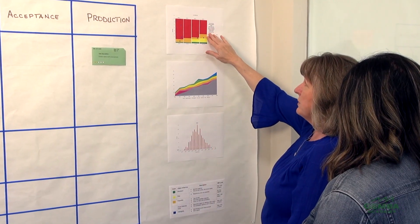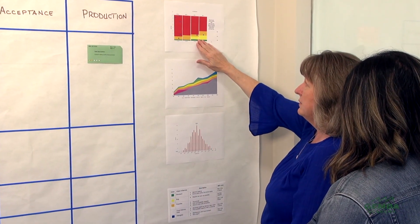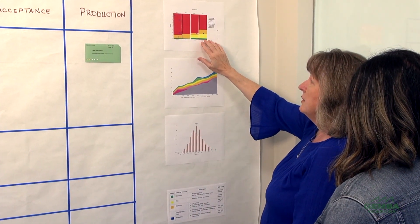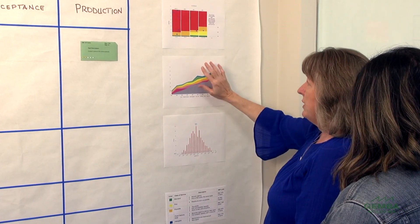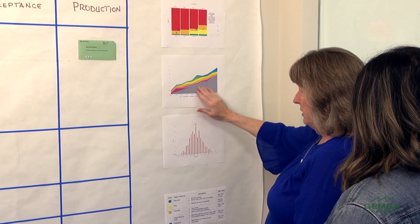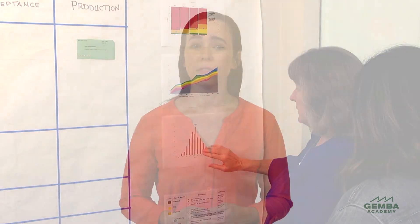Teams practicing Kanban collect data on their process, tracking metrics such as WIP, lead time, cycle time, and throughput. When workflow is relatively stable, teams can expect similar work items to take a similar amount of time.